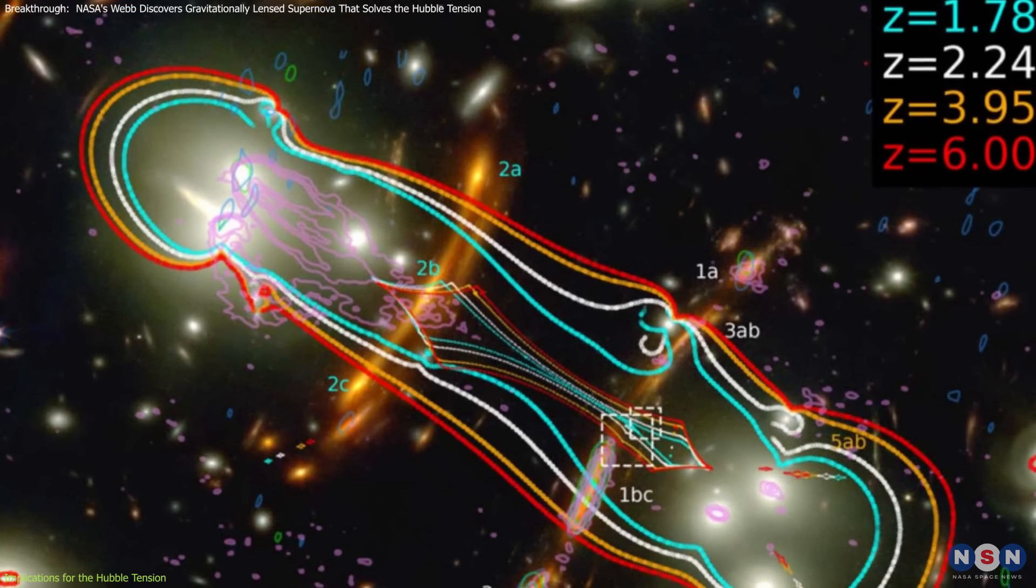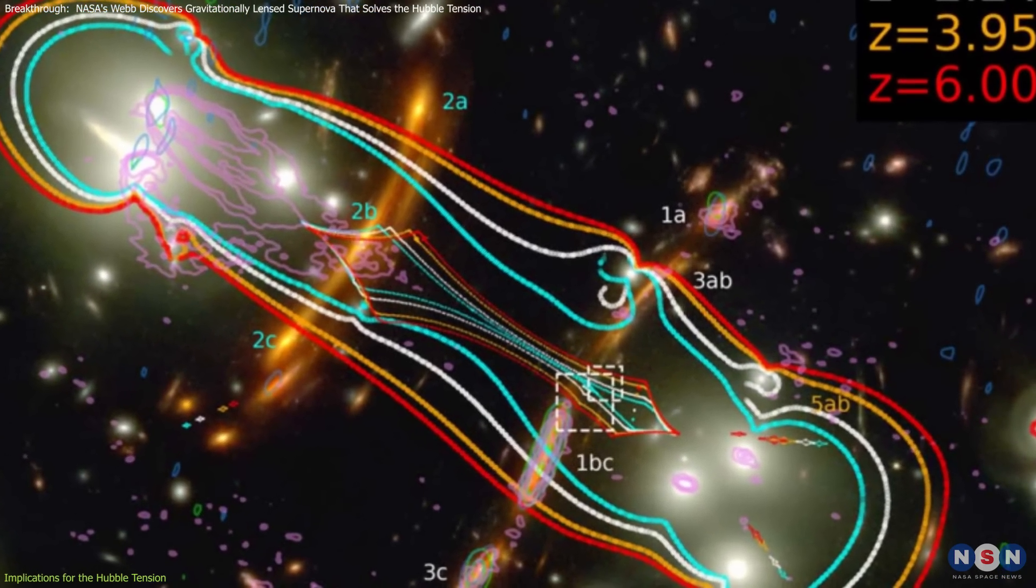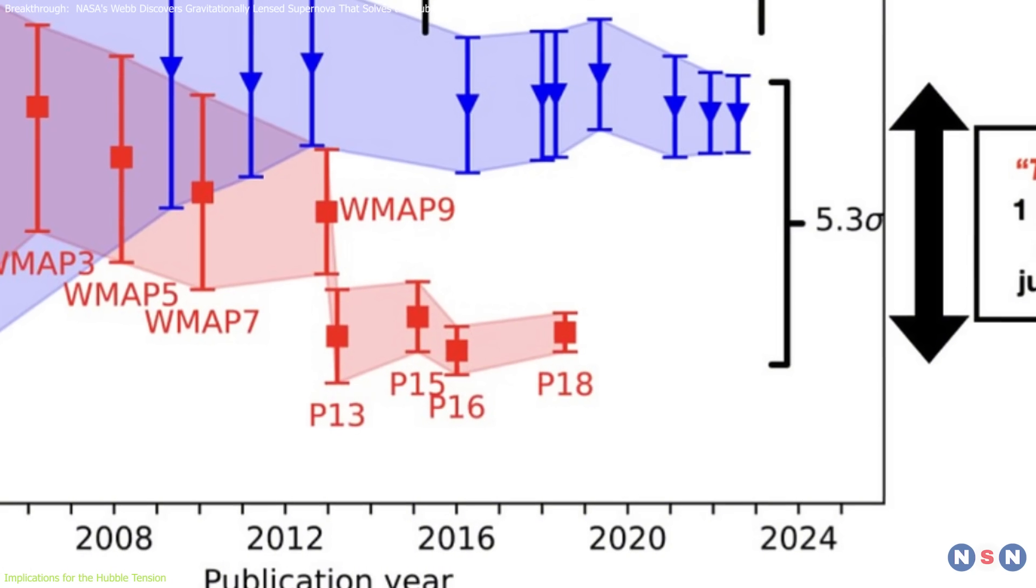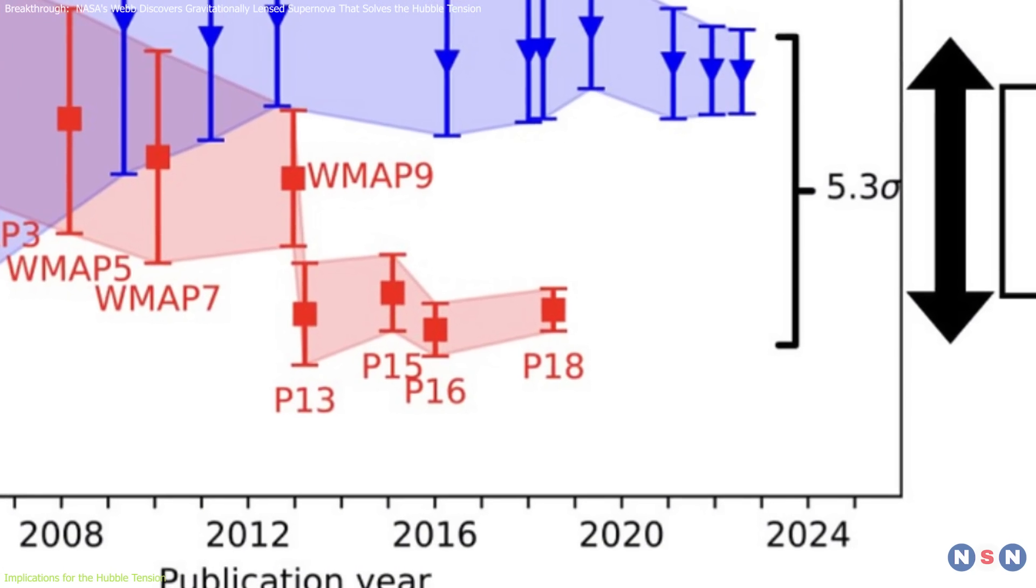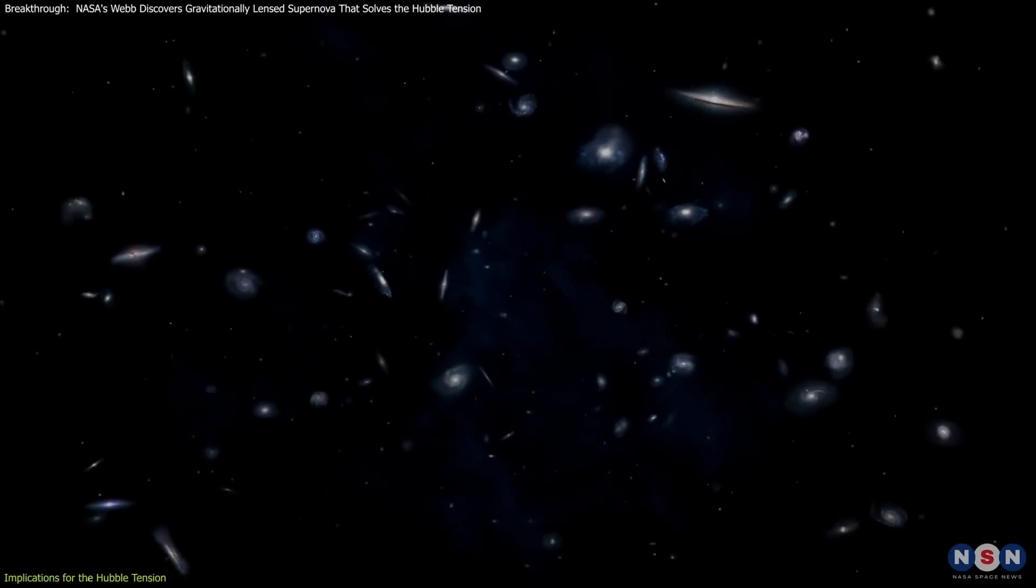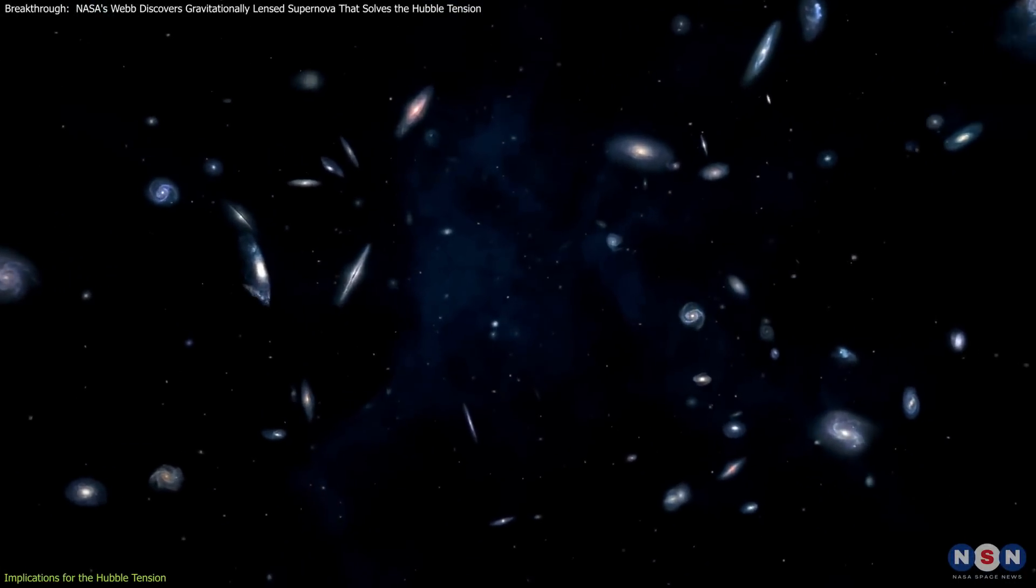The initial measurement of the Hubble constant from Supernova Hope, 75.4 kilometers per second per megaparsec, still shows some tension with values derived from the early universe, bringing us closer to resolving this long-standing issue. Now, let's explore some theoretical models proposed to address the Hubble tension.